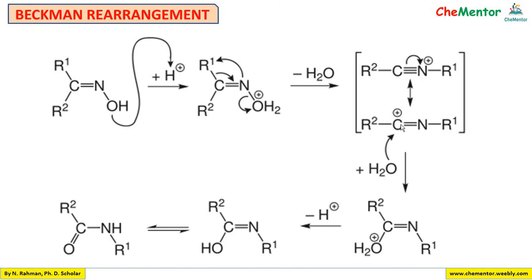We can then draw two resonating structures. In the next step, water attacks on the positively charged carbon — a nucleophilic attack takes place. Oxygen becomes positively charged because it lost electrons forming a coordinate covalent bond with carbon. To neutralize this positive charge on oxygen, one hydrogen undergoes deprotonation, giving an intermediate species.